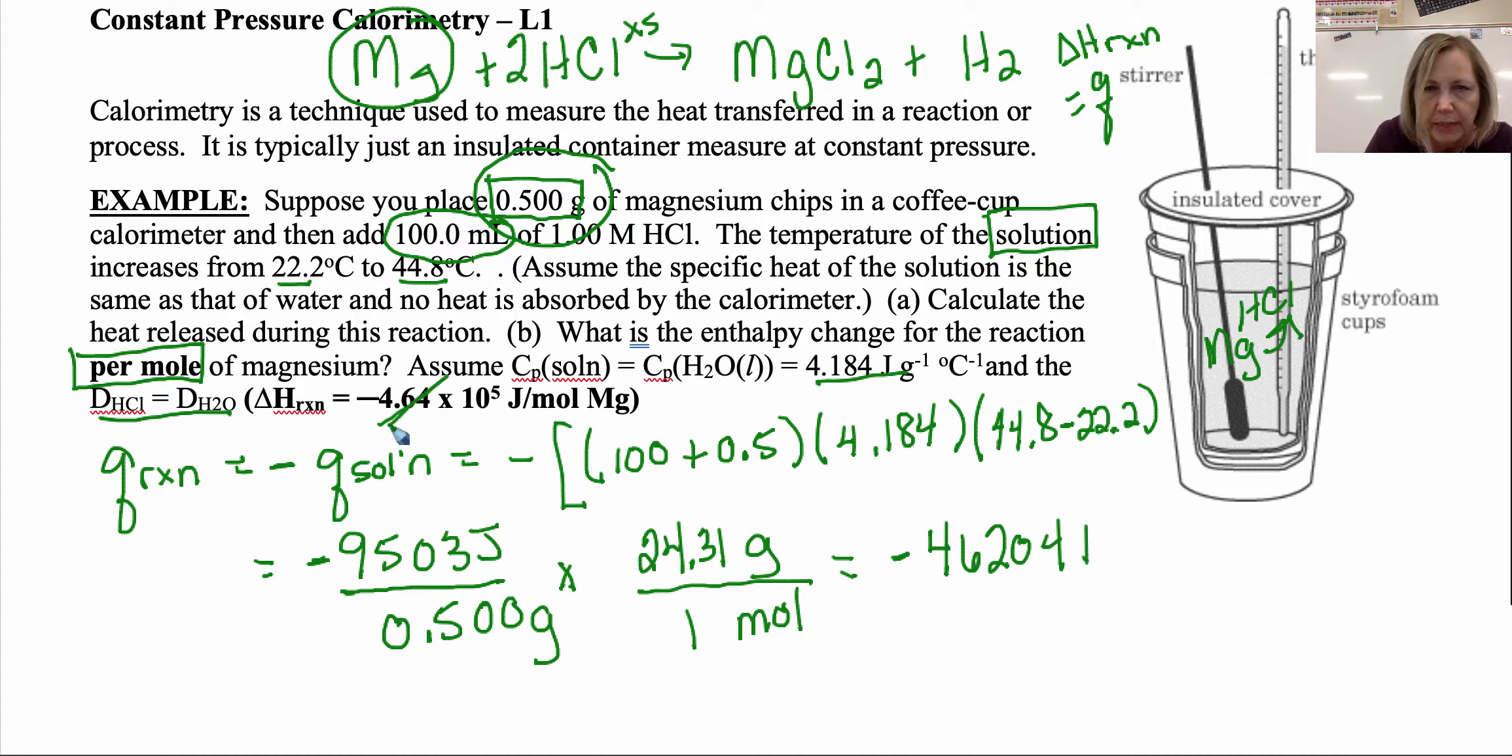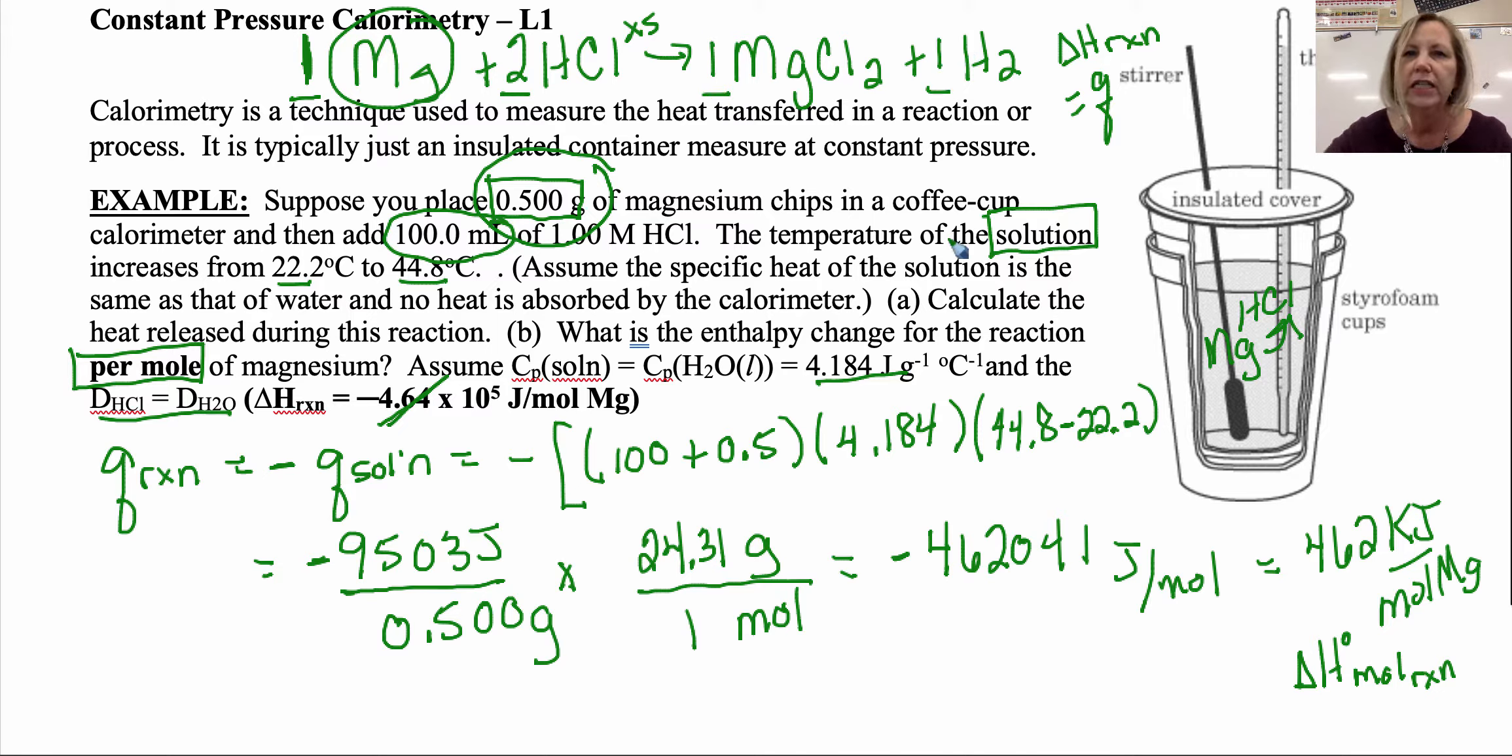So 24.31 grams for every one mole, and I get minus 462,041. That answer is off a little bit. That's in joules per mole, so if I wanted kilojoules, it would be 462 kilojoules for every one mole of magnesium. Since there's one mole of magnesium, that is my delta H naught per mole of reaction as written, which means for every one mole of magnesium, two moles of HCl, one mole of magnesium chloride, and one mole of hydrogen gas. It's per the moles of the balanced reaction as written.